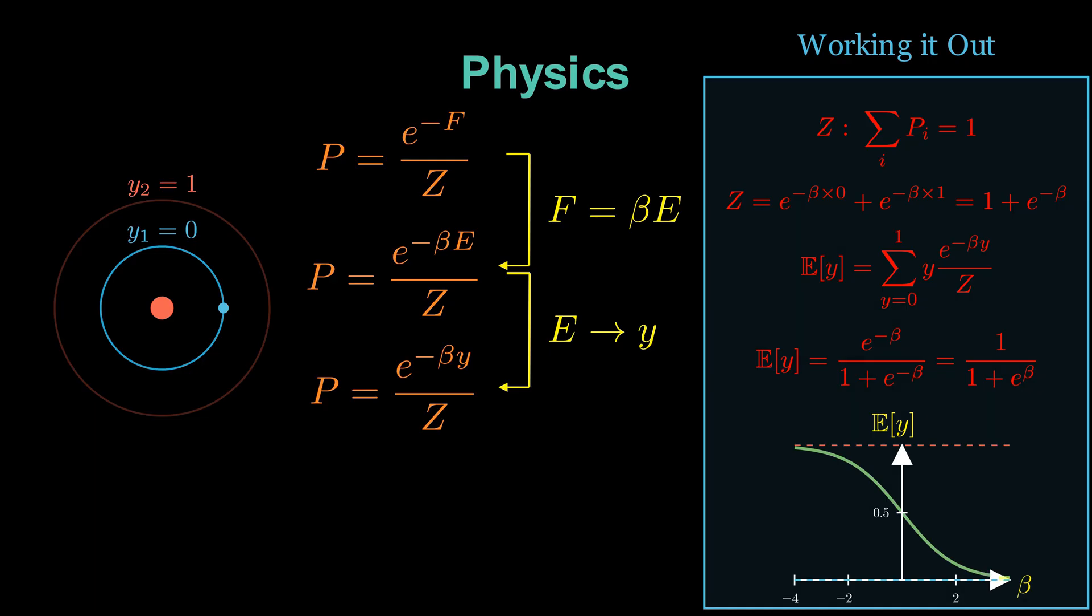At very high positive beta, which means very low temperature, the expected energy approaches zero. The electron almost always stays in the lower orbit. At very negative beta, expected value of Y approaches one. The electron almost always stays in the upper orbit. Note that except in a very small range around beta equal to zero, the expected energy almost always has exact two distinct values of zero and one.